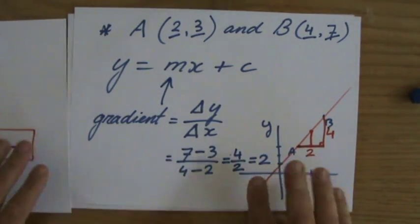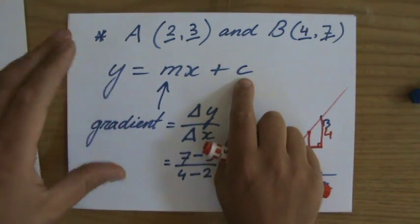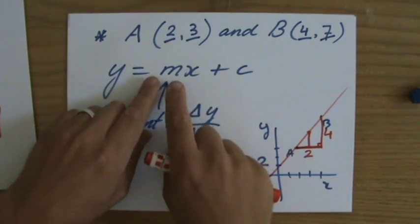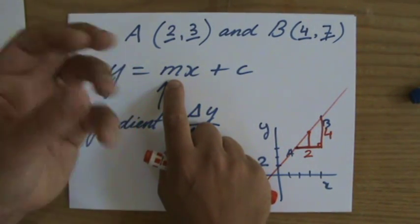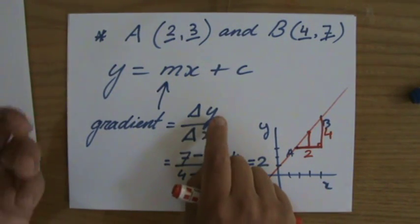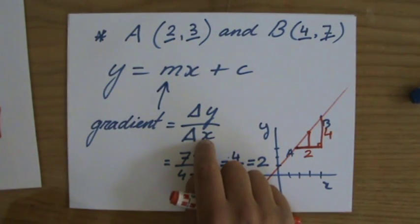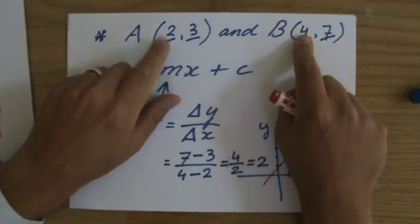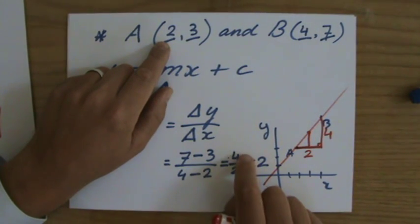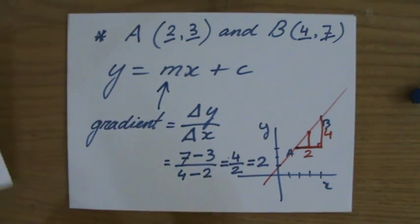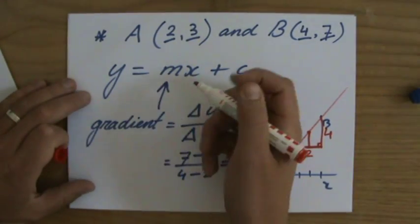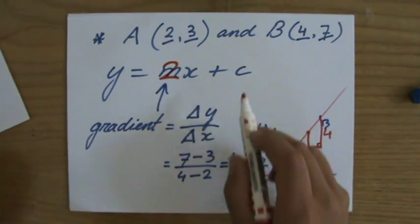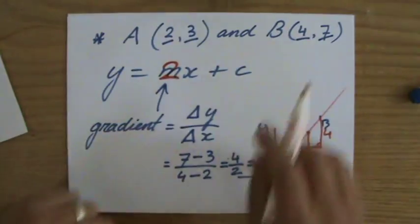So to summarize that, write down the general equation, the gradient intercept form. Y equals mx plus c. You find the gradient and you calculate that. Finding means calculate. Delta y over delta x, the difference in the y-direction divided by the difference in the x-direction. Seven minus three over four minus two. So that's four over two. The gradient is two. So I plug a two here. So it's 2x plus c.